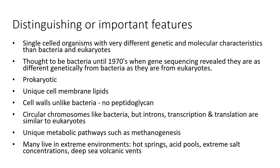Now let's move to the archaea. Archaea are single-celled organisms, but they have very different genetic and molecular characteristics than either bacteria or eukaryotes. Originally they were thought to be bacteria until the 1970s, when gene sequencing became available and people realized they're as different genetically from bacteria as they are from eukaryotes. People had assumed they were bacteria because they're also prokaryotic — they don't have a nucleus. But when genetic sequences became available, it was clear these are really two different groups. They have very unique cell membrane lipids and don't have peptidoglycan in their cell walls like regular bacteria. They do have circular chromosomes like bacteria, but they have introns and their transcription and translation are much more similar to eukaryotes.